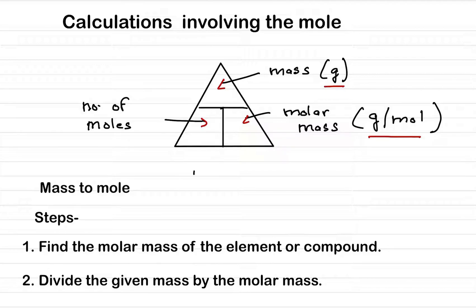If you look at this triangle, you will see at the top it is mass—the unit is in grams. At the left side, number of moles, and on the right side, molar mass—the unit is gram per mole.